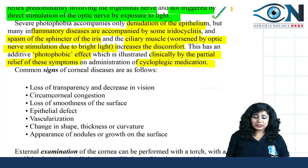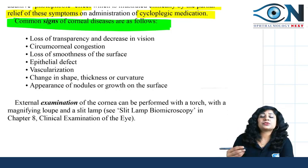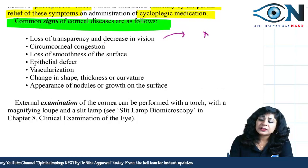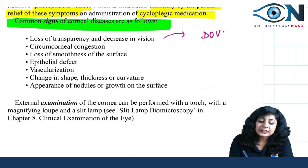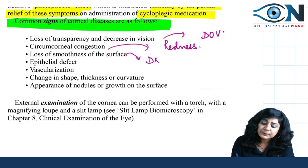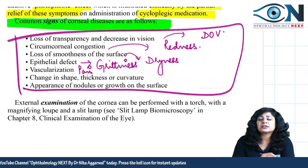Signs of corneal disease include loss of transparency of the cornea, circumcorneal congestion, and loss of smoothness of the surface. The patient may complain of redness, dryness, grittiness, foreign body sensation, vascularization, pain, and discomfort. If the patient is complaining, it is a symptom; if you are observing it, it is a sign.